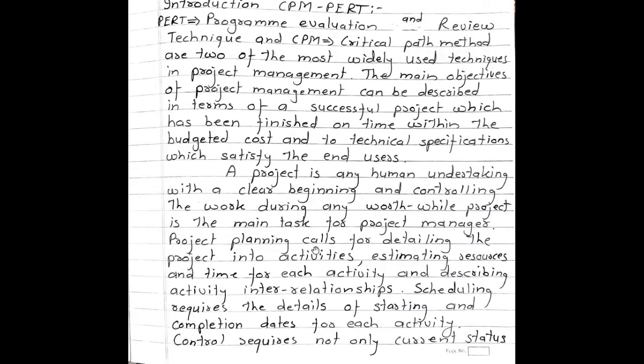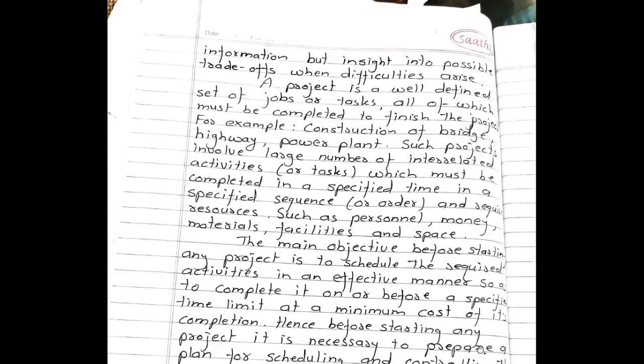Project planning calls for detailing the project into activities, estimating resources and time for each activity, and describing activity interrelationships. Scheduling requires the details of starting and completion dates for each activity. Control requires not only current status information but insight into possible trade-offs when difficulties arise.